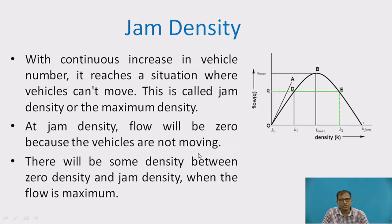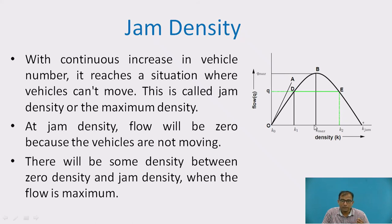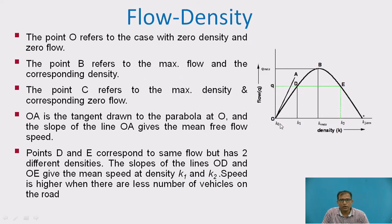In the flow-density relationship, as density increases, flow rises up to the optimum density (k_opt), where optimum flow, optimum speed, and optimum headway all coincide and flow is maximum. Beyond this optimum point, as density increases further, flow starts reducing.